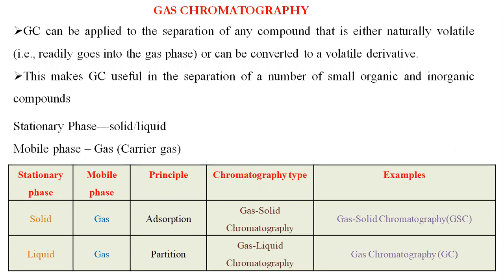Based on type of stationary phase and mobile phase, we categorize gas chromatography techniques into two types. If the stationary phase is solid and mobile phase is gas, we call it gas-solid chromatography, and the principle involved is absorption. If the stationary phase is liquid and the mobile phase is gas, we call it gas-liquid chromatography — GLC — which in most cases is called normal gas chromatography, and its principle is partition.